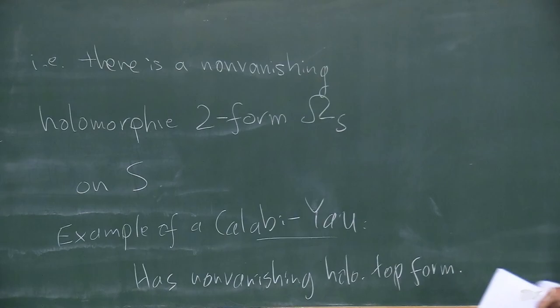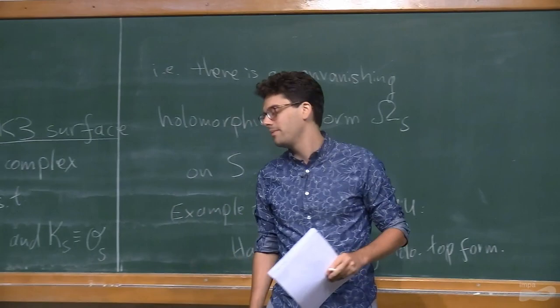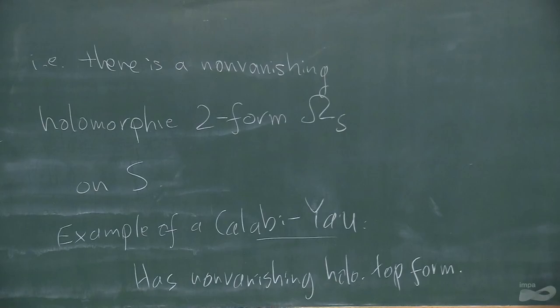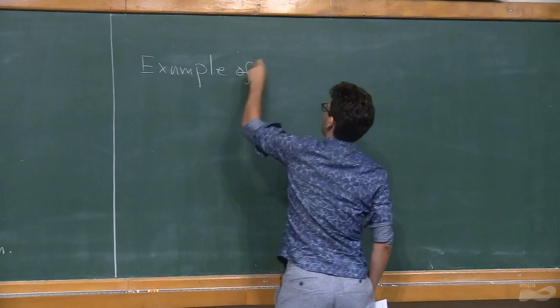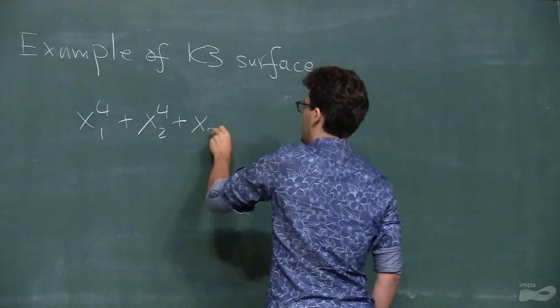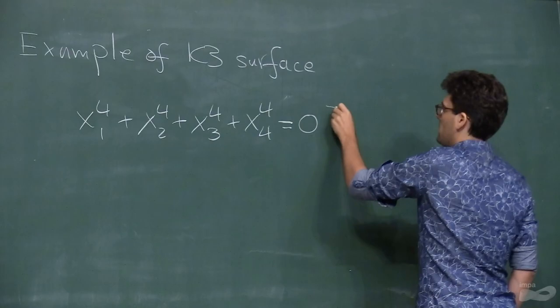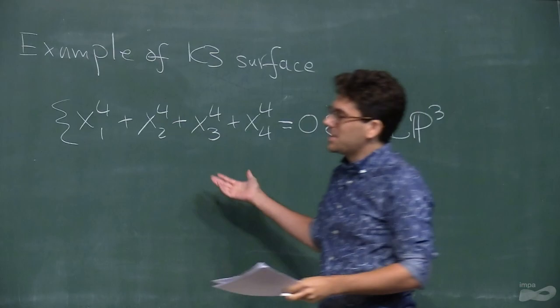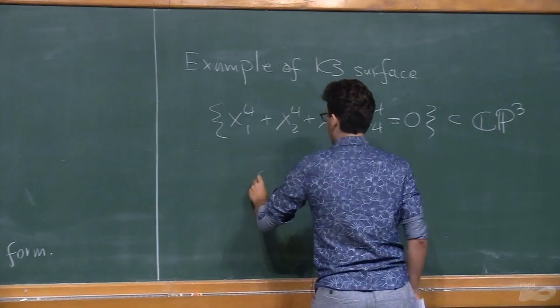For instance, in the case of a compact complex curve, we would have the elliptic curve as the example of a Calabi-Yau. Let me give an example of a K3 surface. If we take X₁⁴ + X₂⁴ + X₃⁴ + X₄⁴ = 0, this locus of points in three-dimensional complex projective space is an example of a K3 surface.